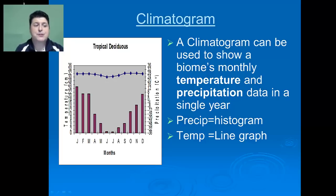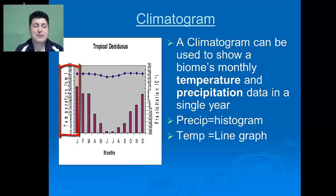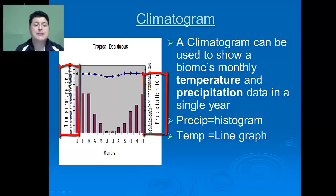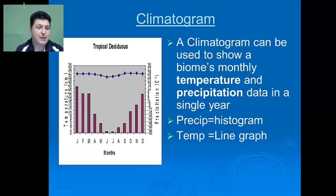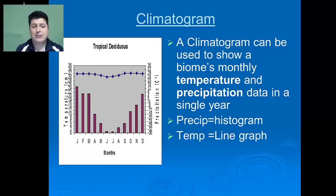One way that we can examine the various changes that happen in a biome in temperature and precipitation is by using a graph called a climatogram. Climatograms have two y-axes, one for temperature and one for precipitation. The precipitation data is presented in the form of a histogram, while the temperature data will be presented in the form of a line graph.